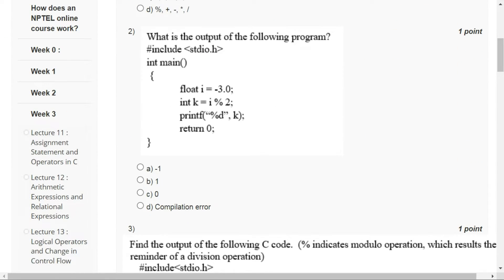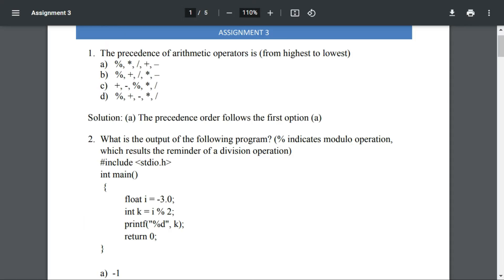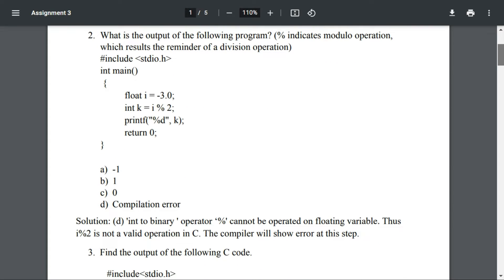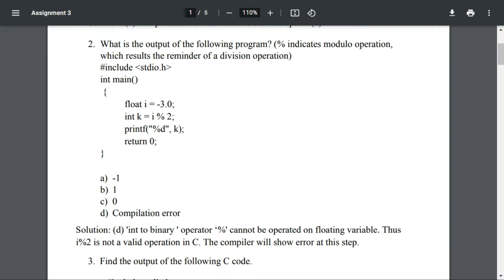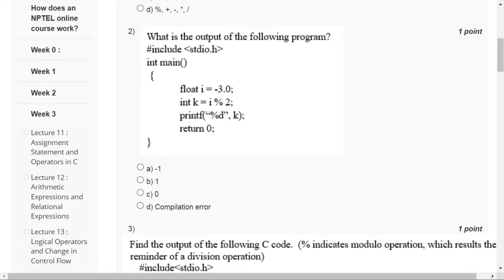For question number two, let's have a look at the solutions. Option D is the correct answer because i is a float and the modulo operator cannot operate on float. It can only operate on integers as its operands. Option D is the correct answer: compilation error.